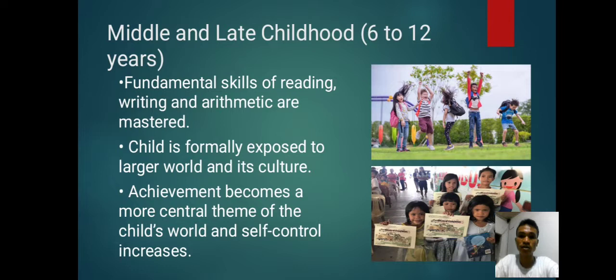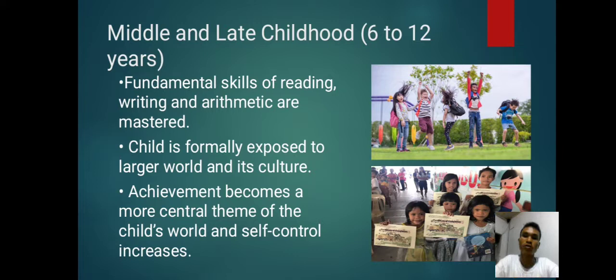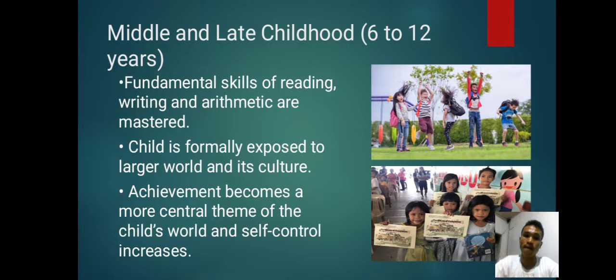Middle and late childhood, 6 to 12 years. Fundamental skills of reading, writing, and arithmetic are mastered. At this stage, they know how to read, write, and also know numbers, which can lead them to get achievements or awards. The child is formally exposed to a larger world and its culture, which is why they spend more time outside the family. Achievement becomes a more central theme; the child's self-confidence will increase, and having achievements will encourage them to learn more.